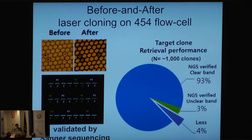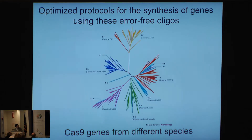We evaluated around 1,000 clones and found that 93% of those clones are correct. After setting up the technology, we basically wanted to optimize our protocols for the synthesis of genes by using these error-free clones — error-free oligonucleotides.